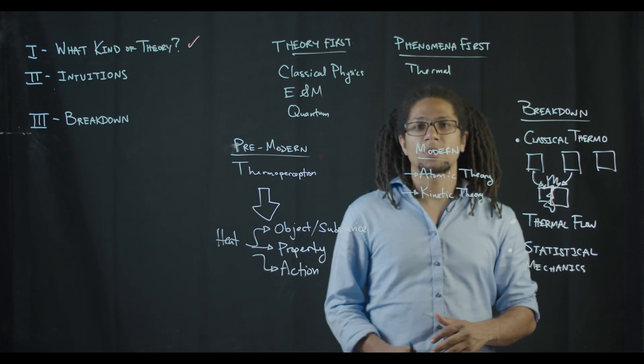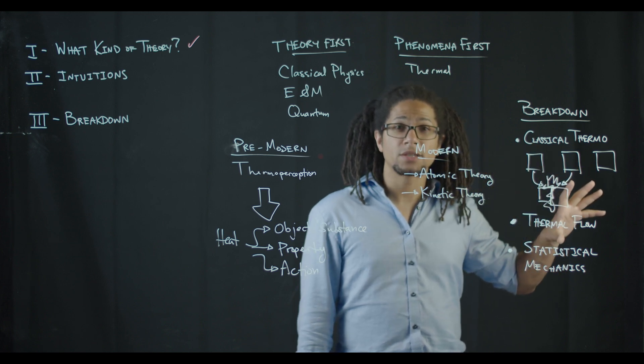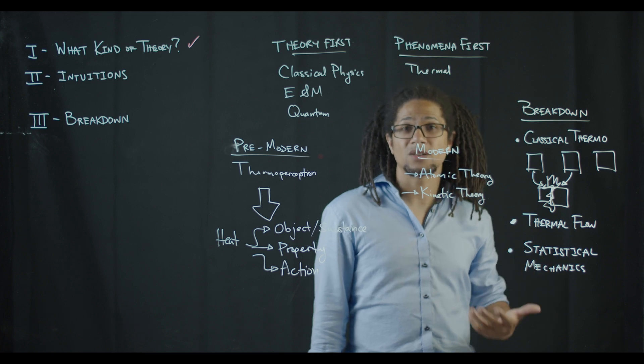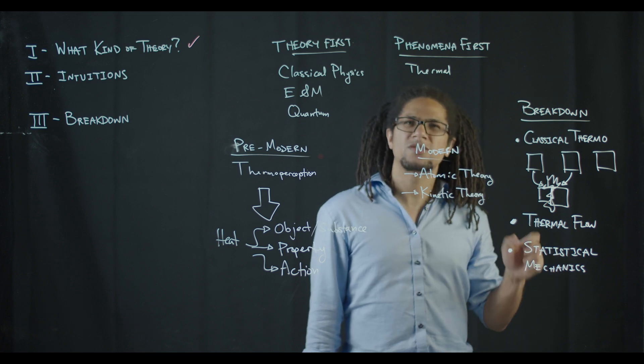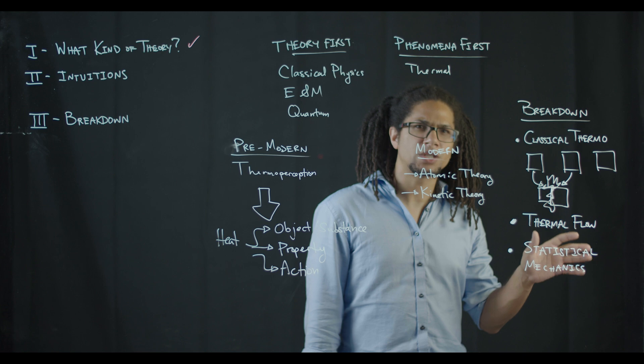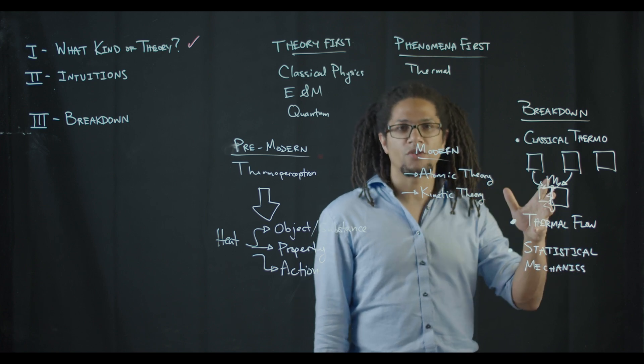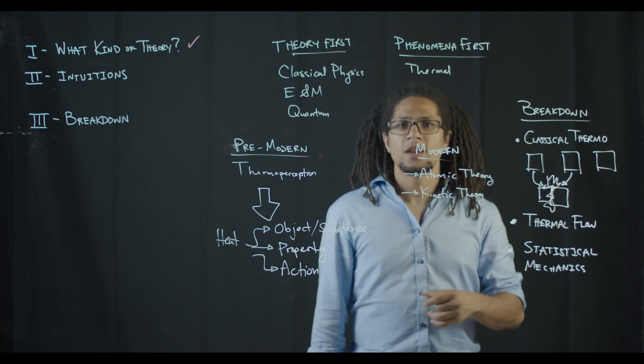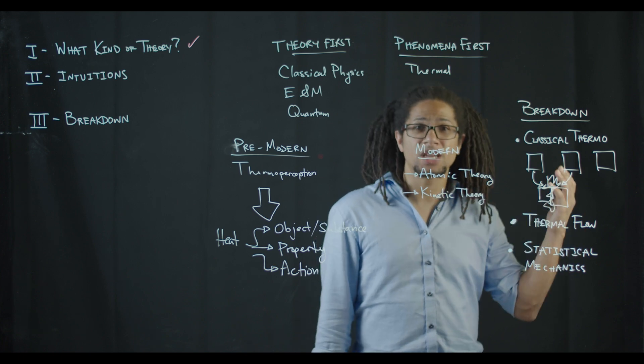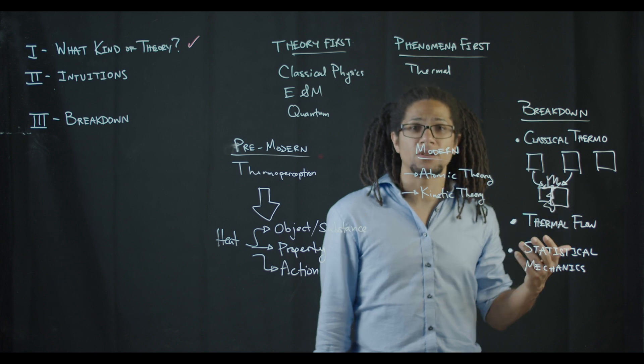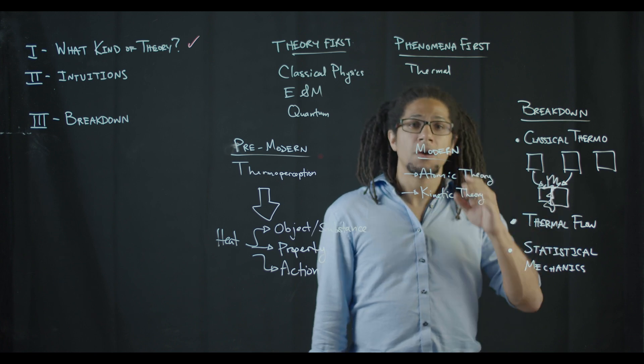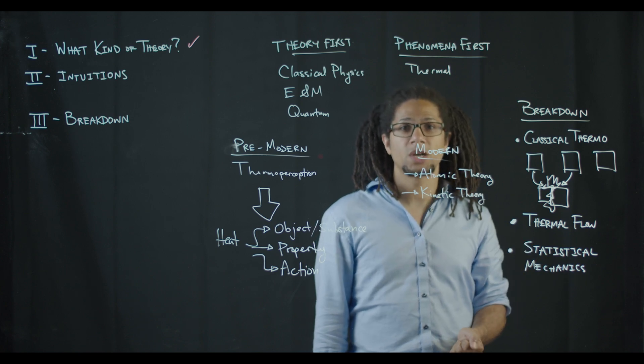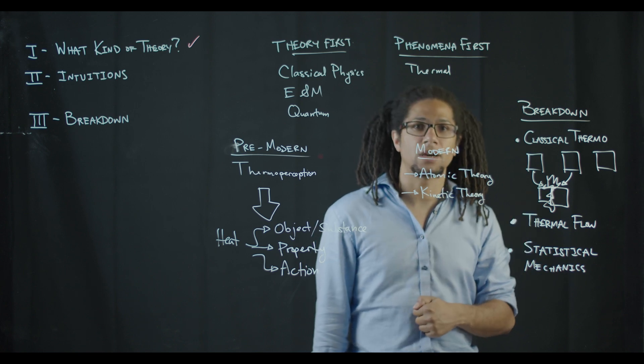Statistical mechanics tries to explain how theories of dynamics with deterministic dynamics like we find in classical mechanics and quantum mechanics, along with some notion of probability, which we'll discuss later, can lead to the kinds of thermal phenomena that we see in classical thermodynamics and in thermal flow. Now we'll investigate whether or not that sort of connection is as easy as some have made it out to be later on in the course. But statistical mechanics is at the forefront of lots of modern physics research and is something I'm really excited to get to cover in this course.